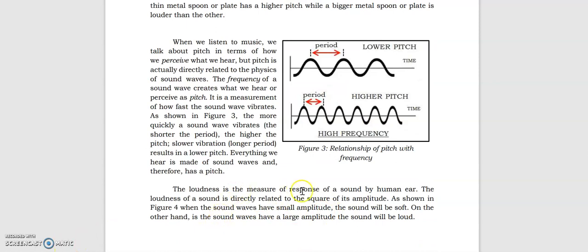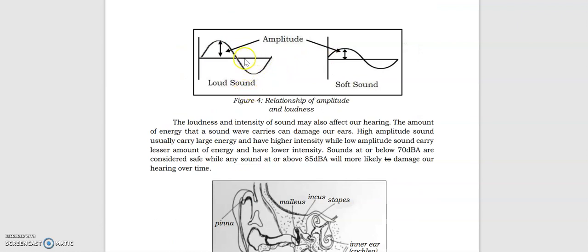Loudness is the measure of response of a sound by human ear. Refer to figure four. If you have a high amplitude sound, usually this carries large energy and have higher intensity. While having a low amplitude sound, it carries a lesser amount of energy and have lower intensity. Always take note that sounds at or below 70 decibel are considered safe. While any sound above 85 decibel will more likely to damage our hearing over time.